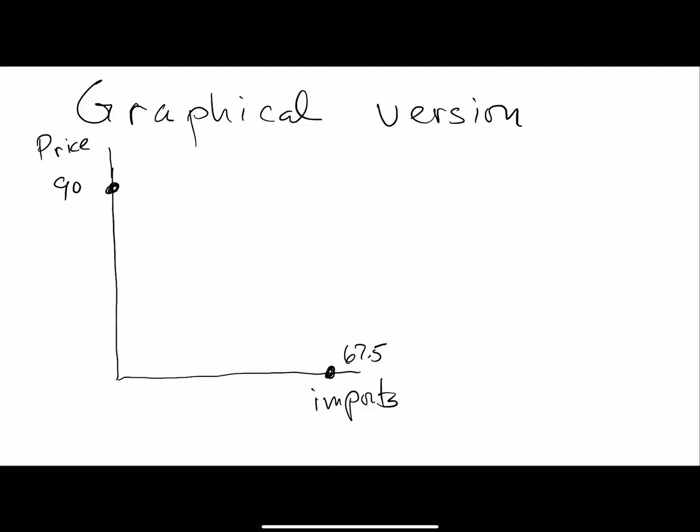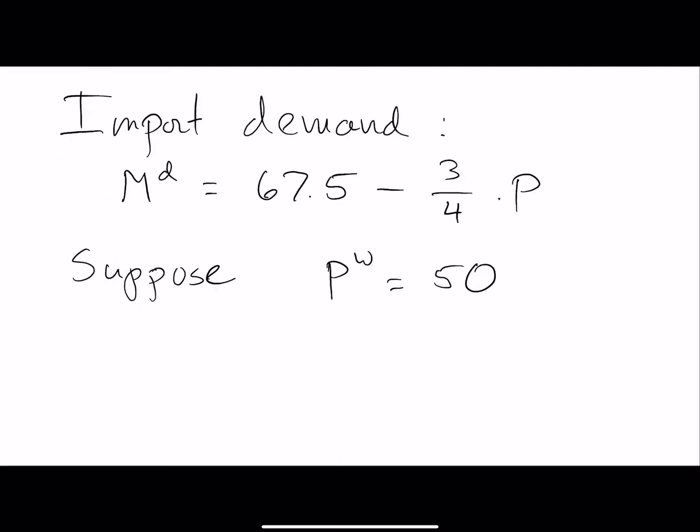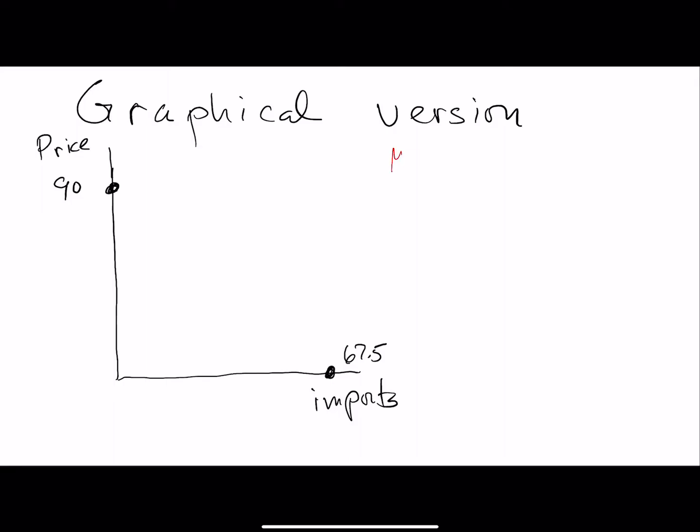If we take a look at this equation, import demand is 67.5 minus 3/4 times P, you're going to get this import demand curve that has these two vertical and horizontal intercepts.